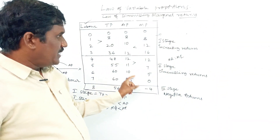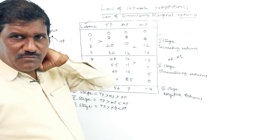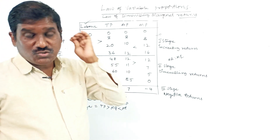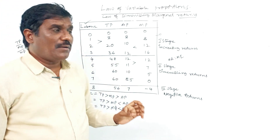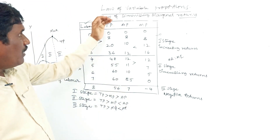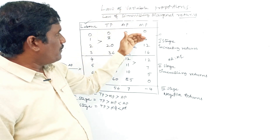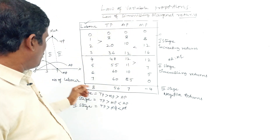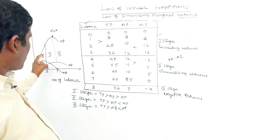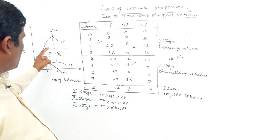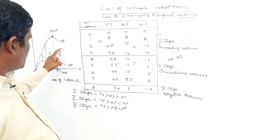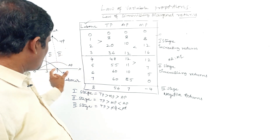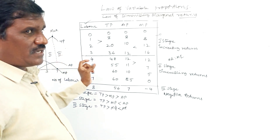The second stage is preferable — it is the equilibrium point. If we compare the law of variable proportions, we look at the first stage, second stage, and third stage — these three stages of reaction.